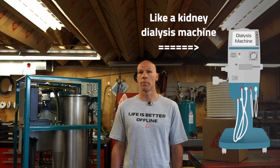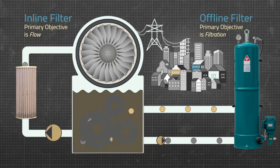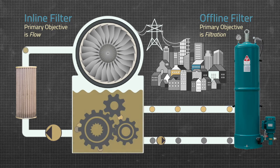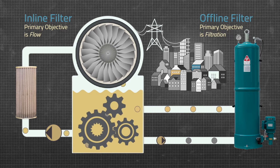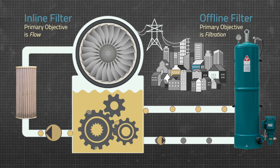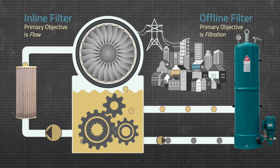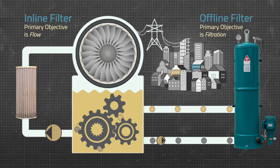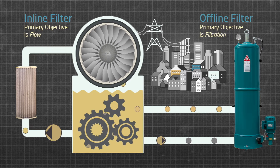But trying to filter ultrafine at high flow comes at the expense of restriction, or rapid filter consumption, or both. Unlike inline filters, offline filters operate in their own slipstream loop outside the main system, leaving that critical flow rate unaffected. The primary mission of the offline filtration is filtration. Because this filter is located in a completely different circuit, flow rate can be optimized to remove problematic contaminants from the oil.